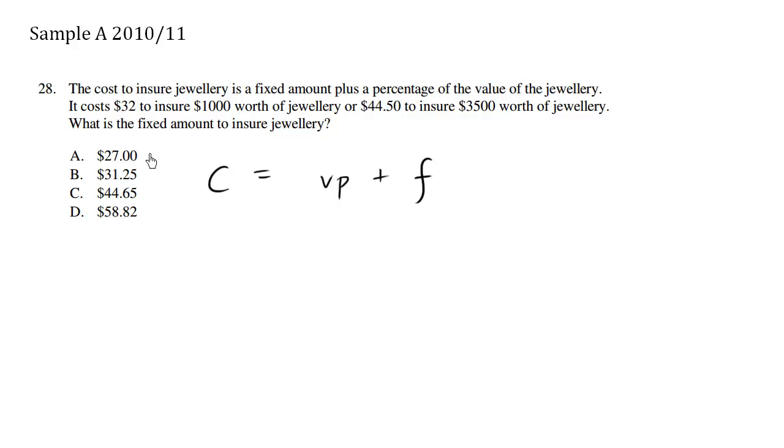What are we given here? It costs $32. The cost is $32 equals $1,000 being the value, the worth, times P as percentage plus F. Since we don't know what F is, we don't know what the percentage is, but we're given some other information.